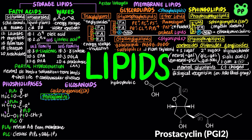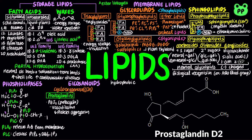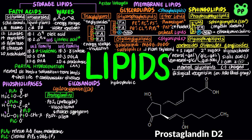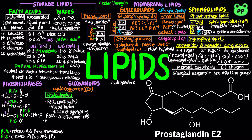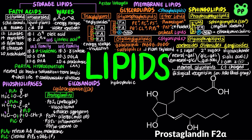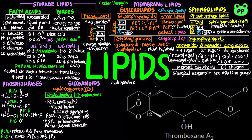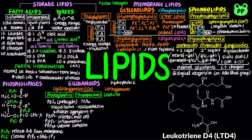Prostaglandin I2 (PGI2), also known as prostacyclin, functions in vasodilation and inhibition of platelet aggregation. Prostaglandin D2 (PGD2) is the major prostaglandin produced by mast cells, functioning in allergic response. Prostaglandin E2 (PGE2) has a wide range of effects and is a prominent eicosanoid that contributes to inflammation and regulation of smooth muscle contraction and gastric acid production. Prostaglandin F2-alpha is activated by oxytocin and functions in inducing uterus contraction during labor. Thromboxane A2 (TXA2) functions in vasoconstriction and activation of platelet aggregation, the exact opposite of prostacyclin. Leukotriene D4 (LTD4) triggers contraction in smooth muscle lining bronchioles; its overproduction contributes to asthma. Leukotrienes also play a role in immunity and allergic responses.